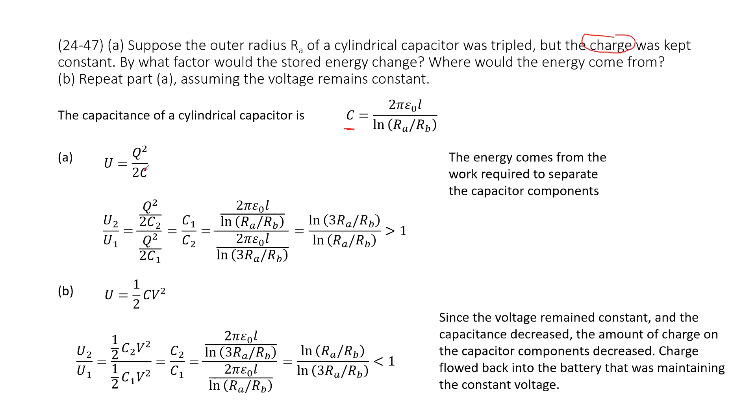We can write the ratio of the final electric energy over the initial electric energy. Final electric energy is q squared divided by 2c2, where c2 is the final capacitance. Initial electric energy is q squared divided by 2c1, where c1 is initial capacitance.